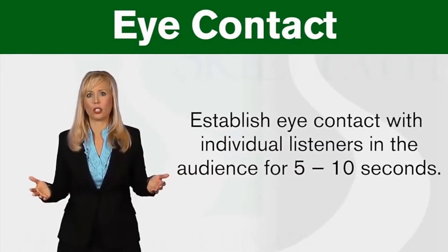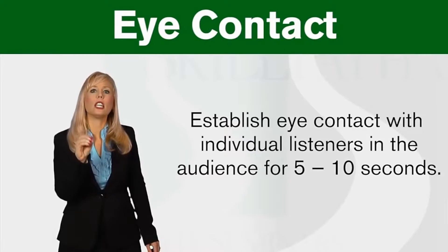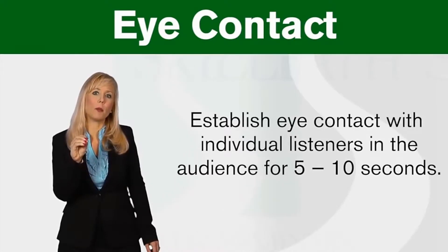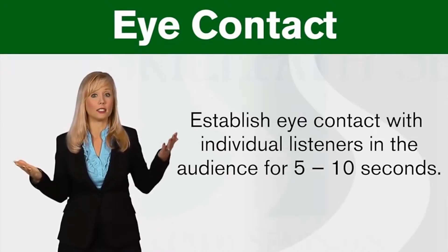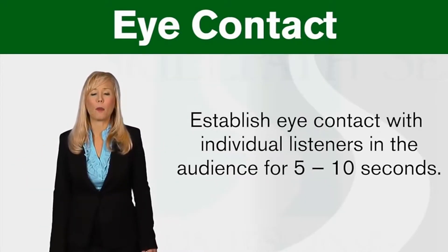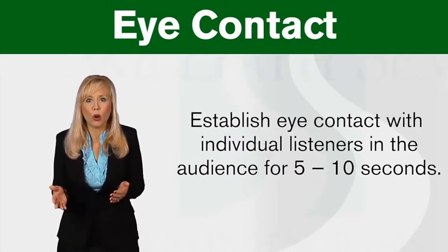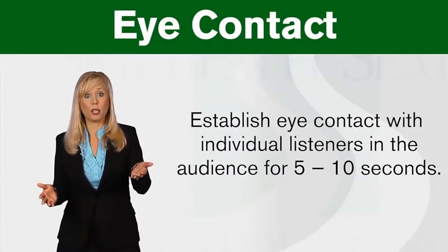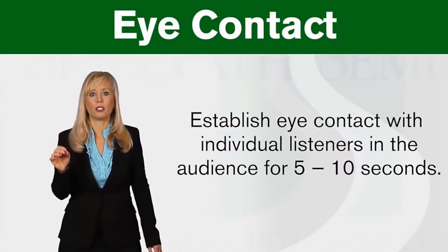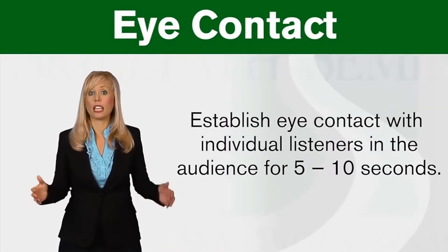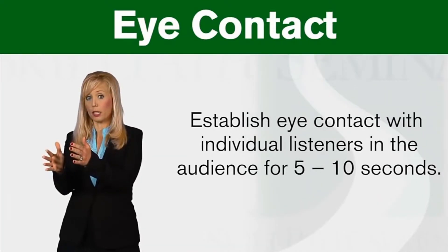Don't just pass your gaze throughout the room. Instead, try to focus on individual listeners and construct a bond with them by looking at them directly in the eye for 5 to 10 seconds. To make this happen a little easier, find a single person in the audience — those who are nodding in agreement or fully engaged with your every word — and make eye contact with him or her. Stay with that person long enough to deliver a full sentence or complete thought.